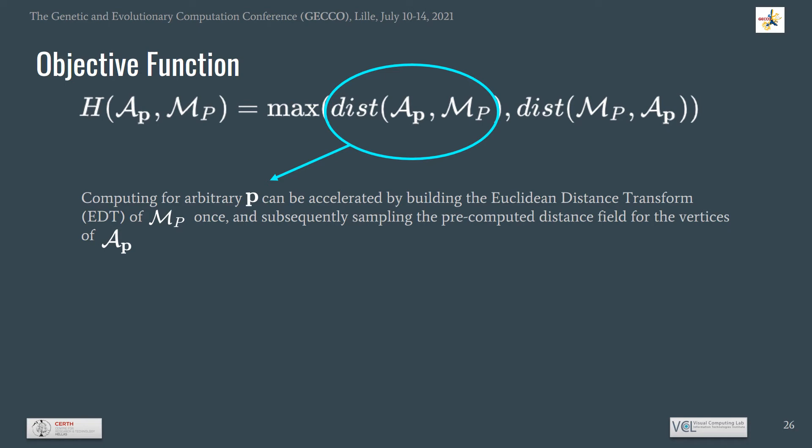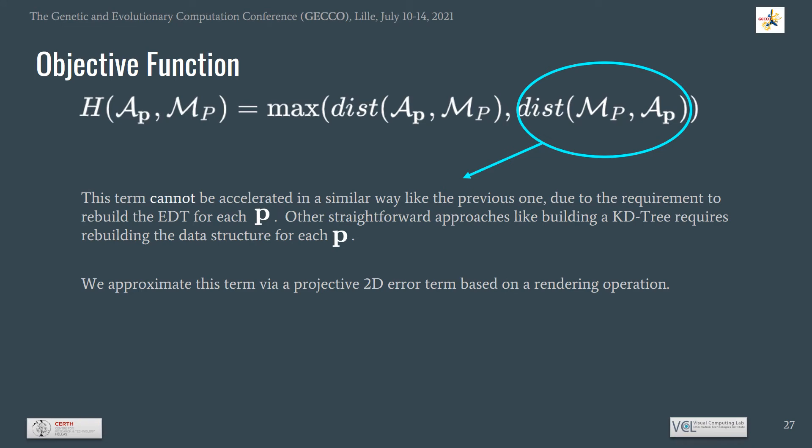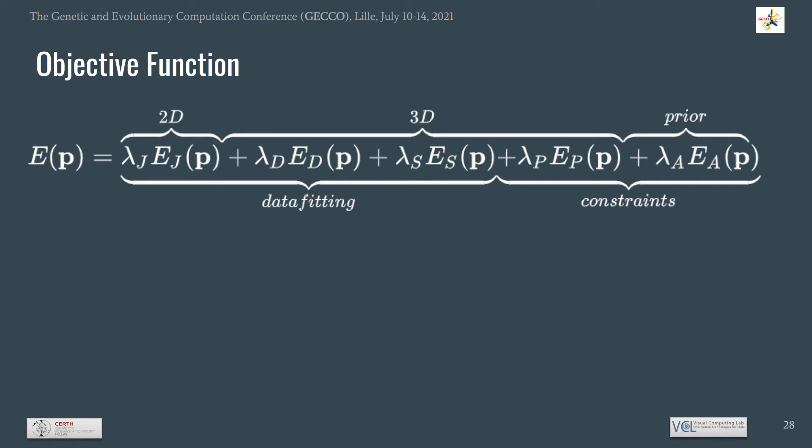The distance computation from the animated template to the target mesh can be accelerated by building the Euclidean distance transform of the target mesh and subsequently sampling the pre-computed distance field for all vertices of the animated template at any arbitrary pose. However, the backward distance computation from the target mesh to the animated template cannot be accelerated in the same way, as this would require rebuilding the distance field for each pose. We approximate this term via a projective 2D error term based on a rendering operation. Our objective function is a composition of 2D and 3D error terms as well as a prior on plausible human poses, serving as a proxy to the Hausdorff-like distance by substituting the max operation with a sum.